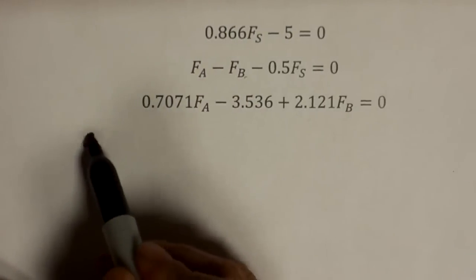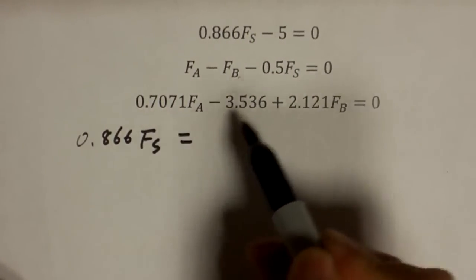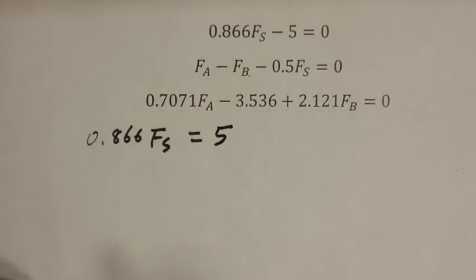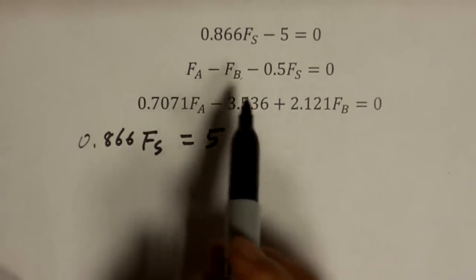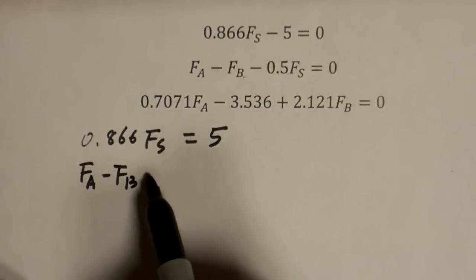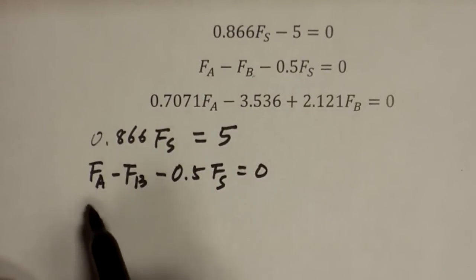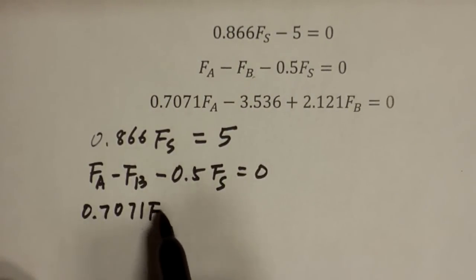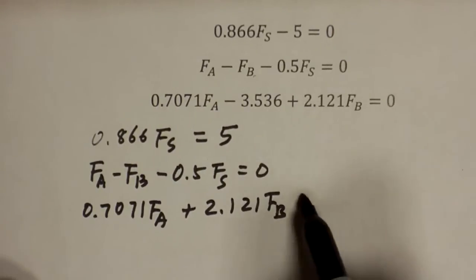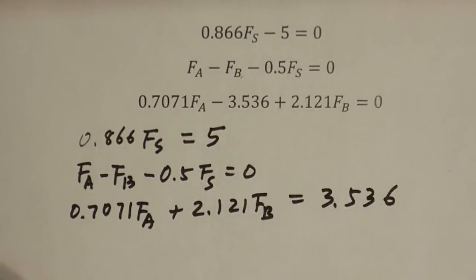Let's first change that into 0.866Fs equal to, by adding number 5 to each side, you get equal to 5. This one, you don't have anything to move, so we're just going to copy it down here. In the third line, that's the one that we have to move, so just copy it. And when you move, the sign changes to plus, and that's good now.